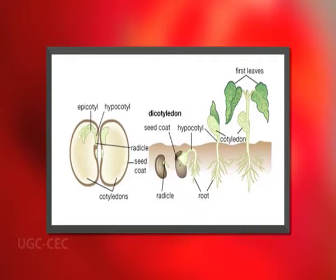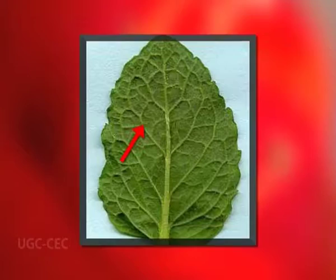The class Dicotyledony is characterized by two cotyledons, leaves with reticulate venation, tetramerous or pentamerous flowers, and a stem with open vascular bundles. It is divided into two subclasses: first, Archichlamydeae, and second, Metachlamydeae.